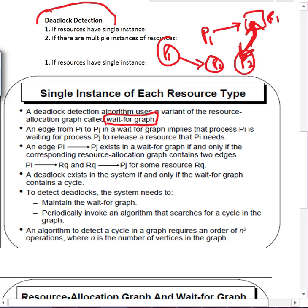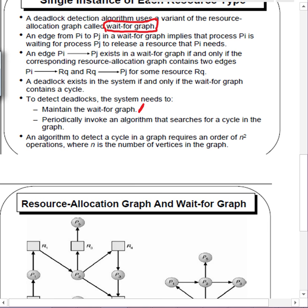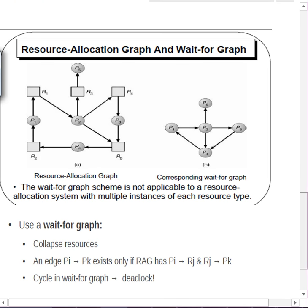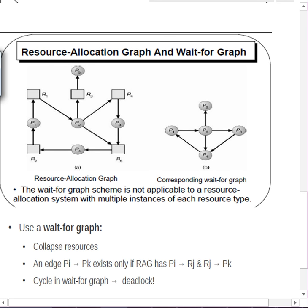To detect deadlock we maintain the wait-for graph and periodically invoke an algorithm that searches for a cycle in the graph. If a cycle is found, deadlock has occurred. The algorithm to detect a cycle in a graph requires O(n²) operations, where n is the number of vertices in the graph.